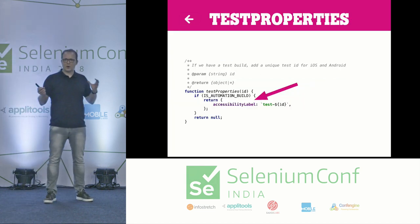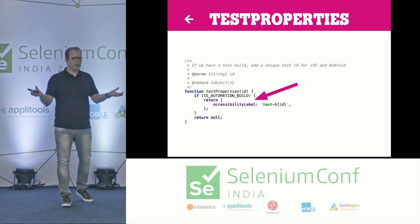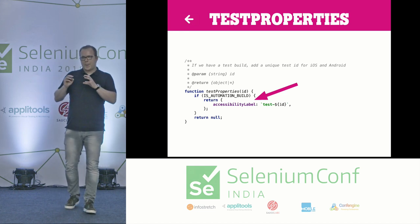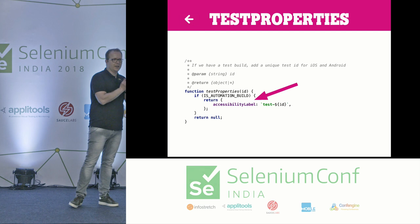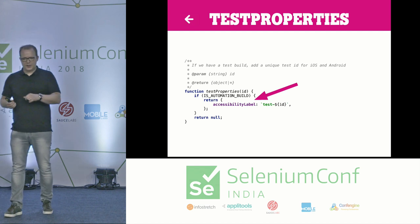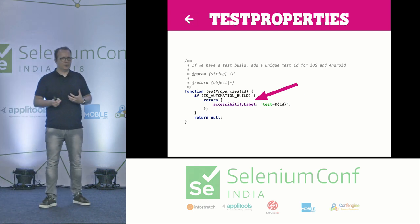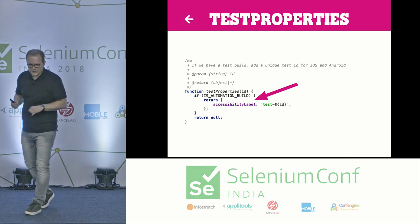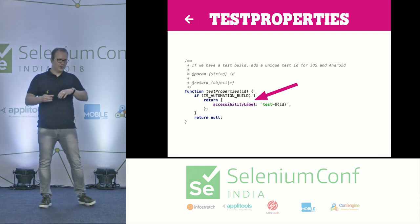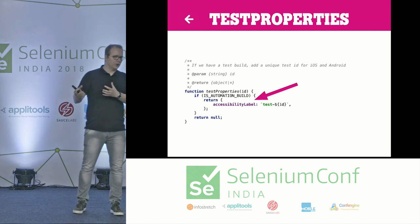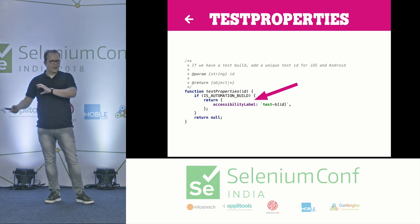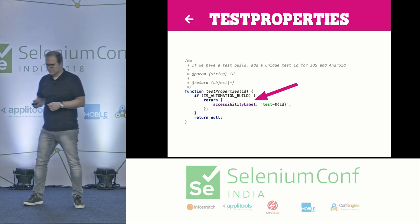React Native is just using JavaScript to build a complete new app. To get accessibility labels on the devices and apps, I created a specific method called 'test properties.' It returns an accessibility label. But importantly, I check: is it an automation build? I was able to create specific builds — a beta build, a release build, and an automation build. So only when I have an automation build, I return the accessibility labels I need.